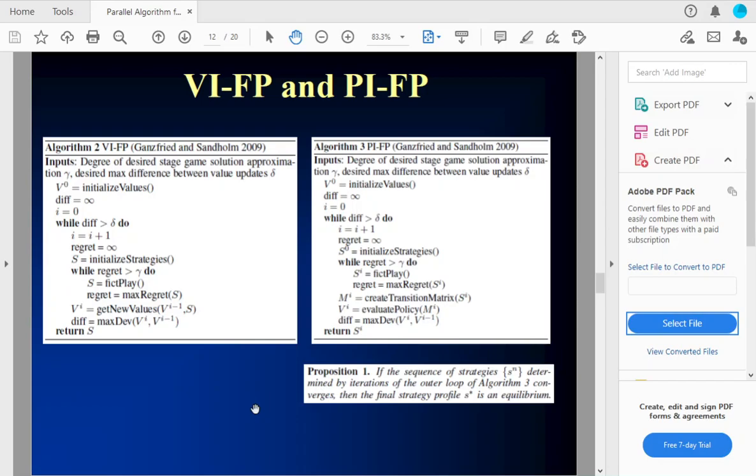And so here are the prior approaches that were presented in earlier work applied to poker. This value iteration, VIFP basically combines fictitious play for solving the stage games and value iteration for updating the values. PIFP uses policy iteration for updating the values. And both of these basically ran, they had a parameter for the max difference between value updates and for stage game approximation. And they ran these until they got down to that level before moving to the next iteration. And so, we can't prove for VIFP actually, there's a counter example, but for PIFP, it's proven if it converges that, the strategies constitute an equilibrium. It's not guaranteed to converge, but if it does, it's an equilibrium.